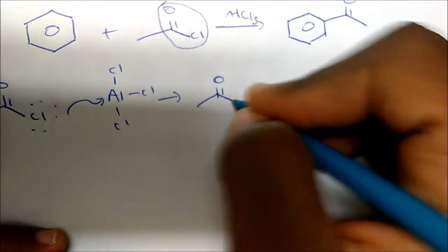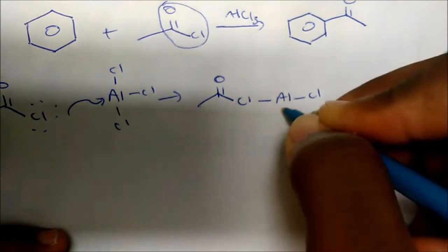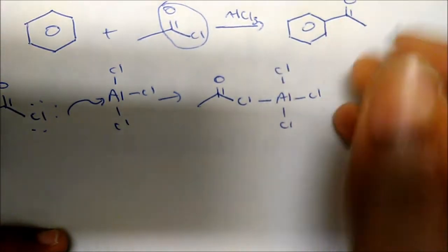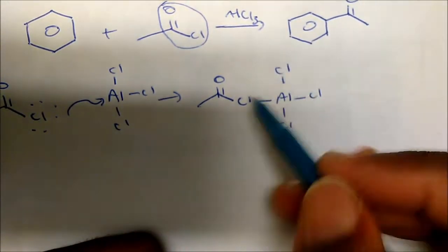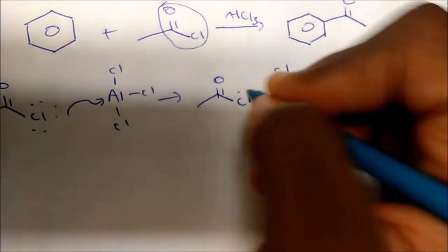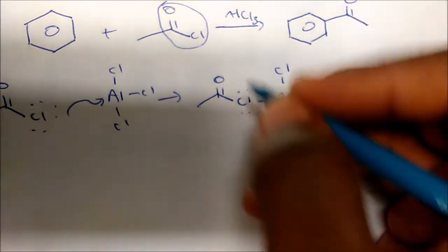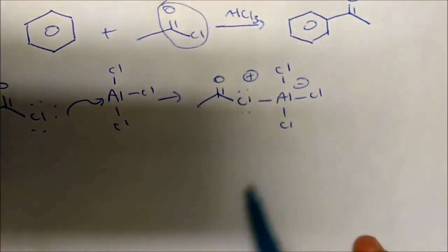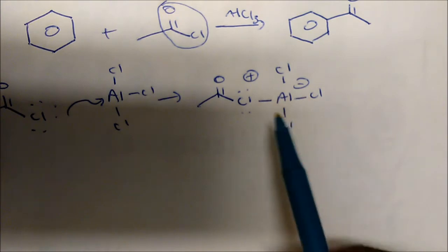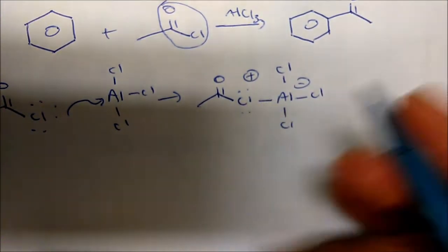Once I form my bond, I have chlorine bonded to aluminum that's bonded to three other chlorines. Aluminum has three valence electrons, now it has four bonds, giving it formally negative one charge. My chlorine still has two lone pairs around it, giving it a plus one formal charge. Notice my charges are being conserved. This bond is highly reactive.